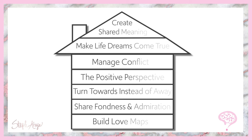The last level of the sound marital house is creating shared meaning. At this stage, we're looking for whether you can intentionally create goals and purpose together. We might see this through family traditions or rituals you create with your partner — something as simple as date night every Friday, all the way up to, as grandparents, having your grandchildren over every summer and building your year around that. Having shared goals and making meaning of your life together intentionally — that is the last step of the sound marital house.